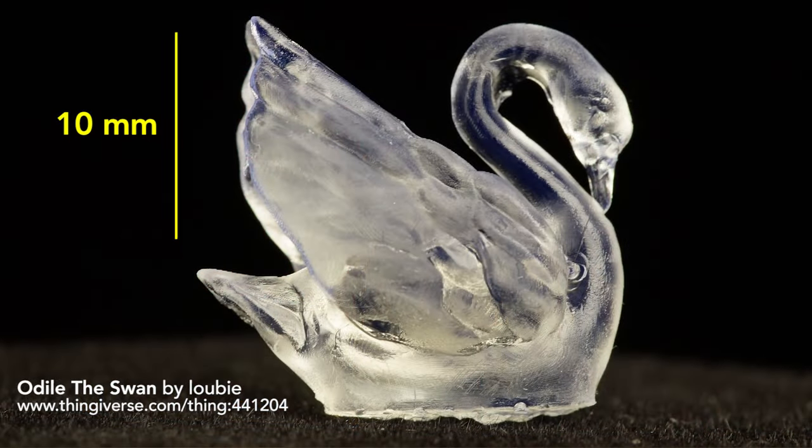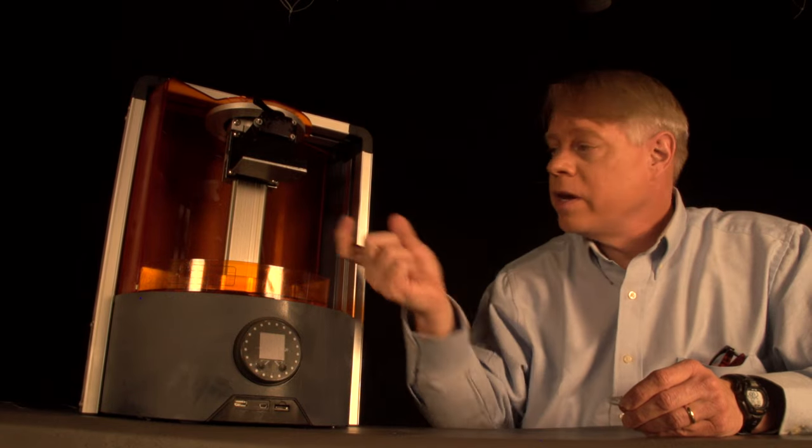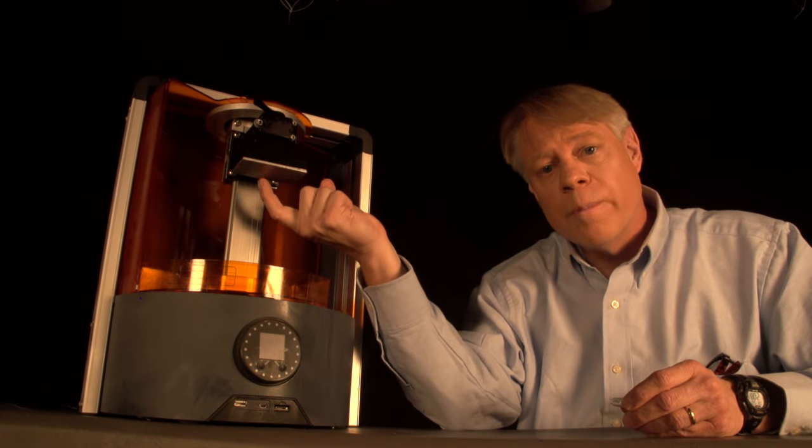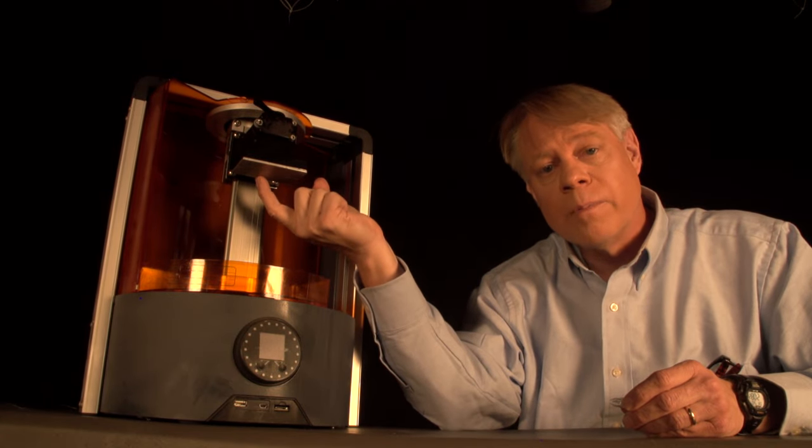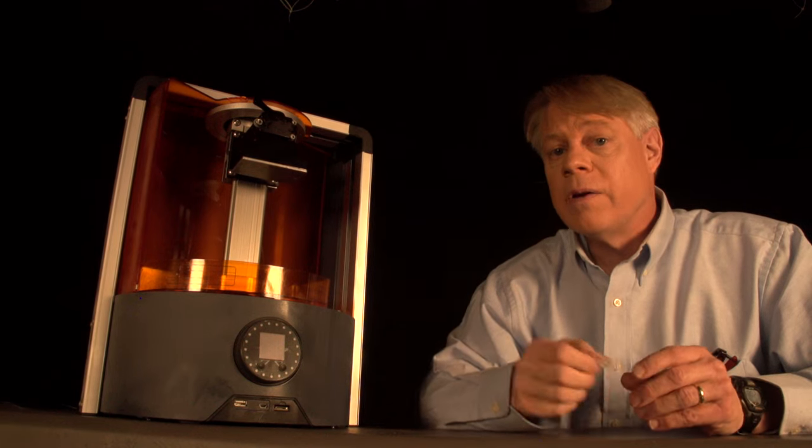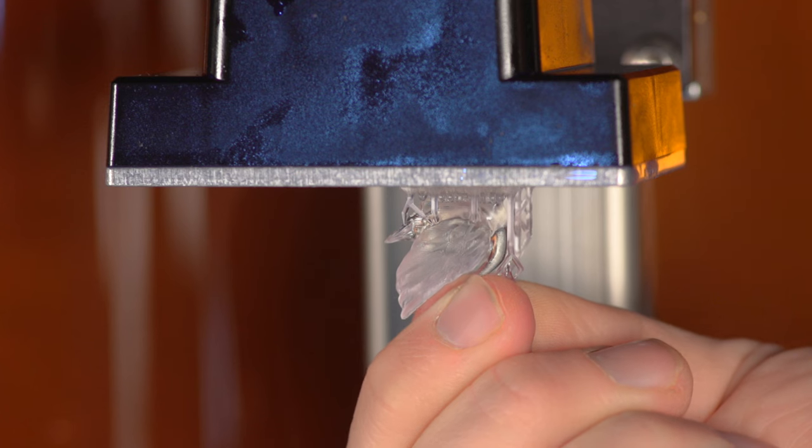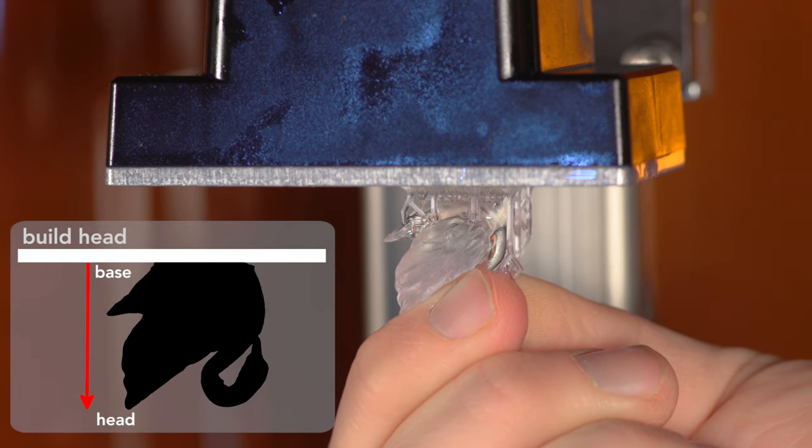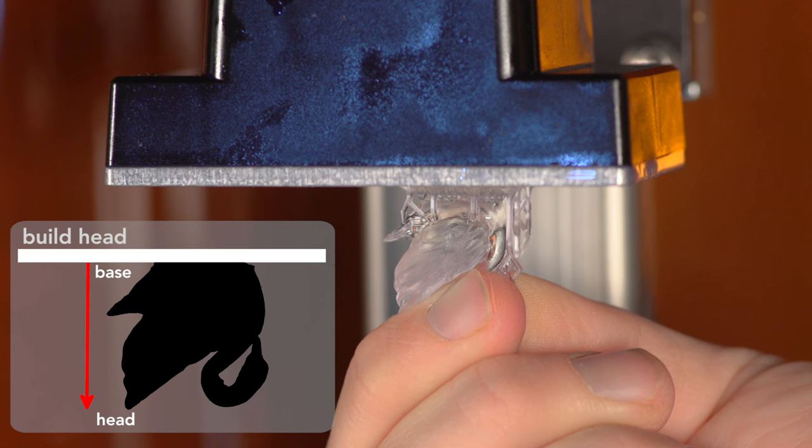Odile the Swan. It's one of several items used to test and benchmark 3D printers. On this printer, the swan is created here on the lower side of what is called the Build Head or Build Platform. Odile will be printed upside down here, like this. The printer will first build the base, and then work its way to the Swan's Head.